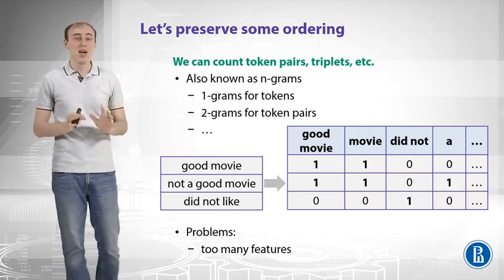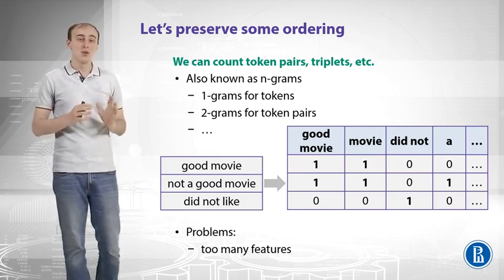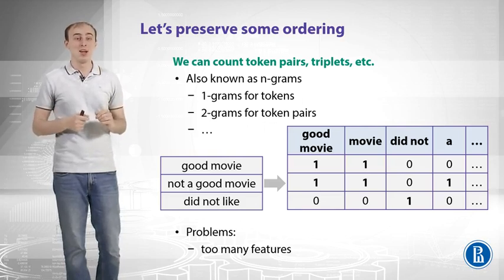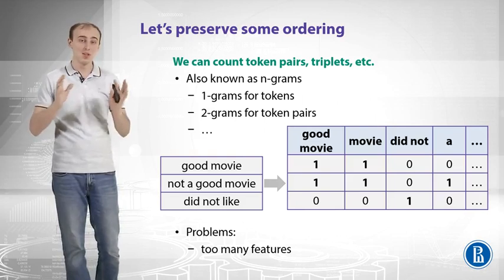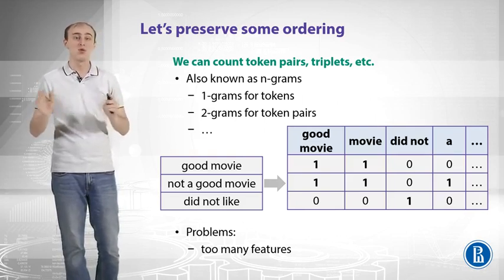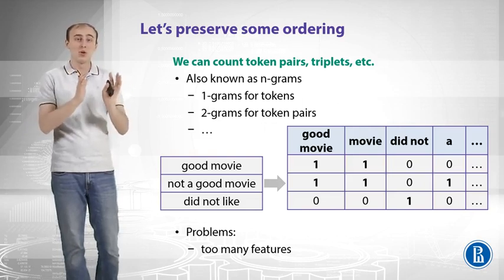Let's look at how it might work. We have the same three reviews, and now we don't only have columns that correspond to tokens, but also columns that correspond to token pairs. Our 'good movie' review now translates into a vector which has one in the column corresponding to that token pair 'good movie', for 'movie', for 'good', and so forth. This way we preserve some local word order.